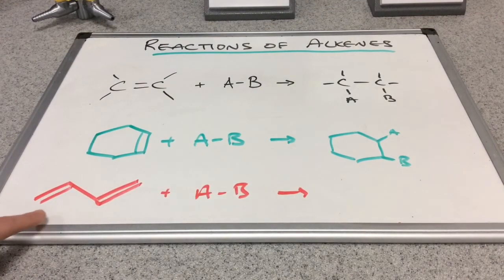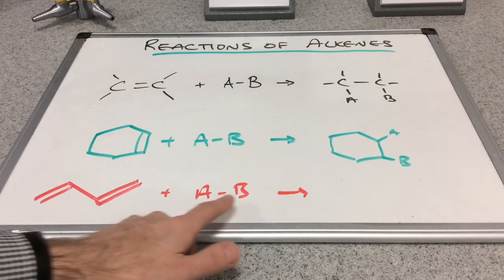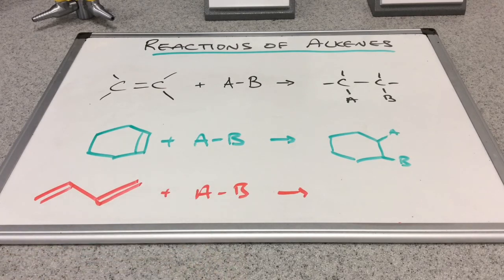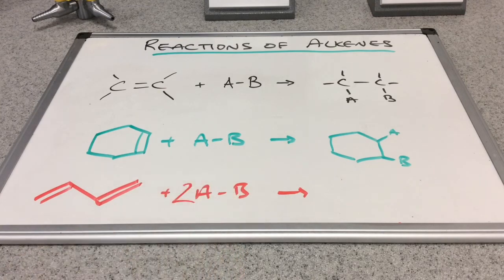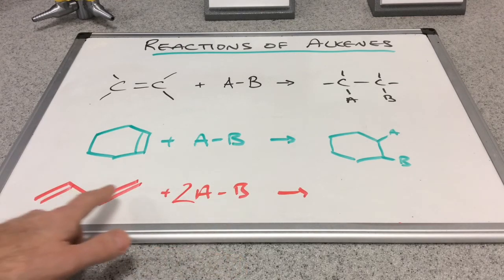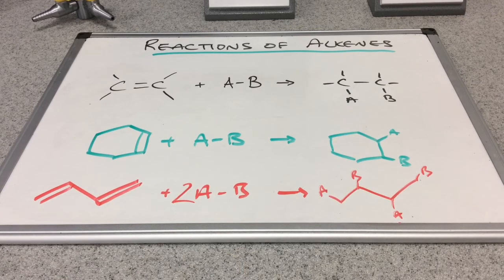If you've got something like this, this is a diene—it's got two carbon-carbon double bonds. We're still going to get the same reaction. Provided there's enough AB—say this diene was reacted with an excess of AB—then we'd need two of those molecules because each AB will add across each of the double bonds, giving you a product like this.